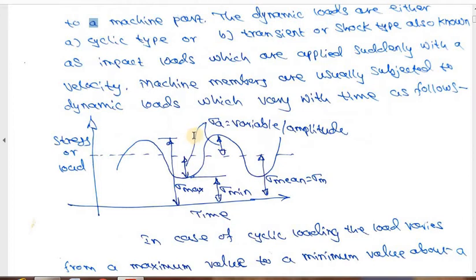A simple example: if you wear a shoe and walk, assume that a person is carrying 50 or 60 kg. When you put a foot onto the ground, the entire load comes onto the shoe. When you lift your foot, the shoe is subjected to zero load. So the load varies from maximum to minimum with respect to time.